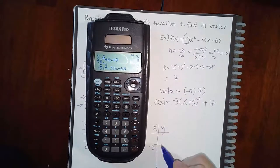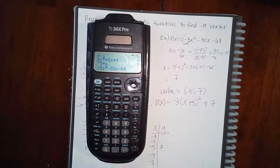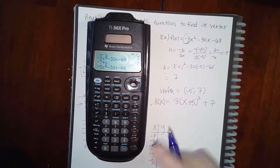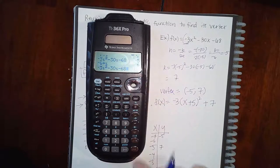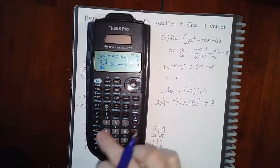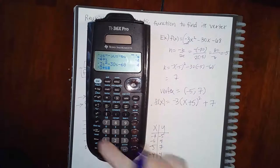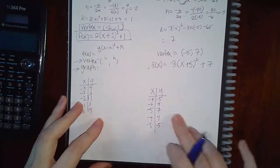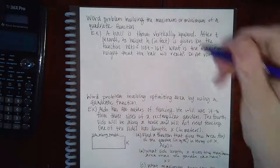To graph, put (-5, 7) in the middle of the table, pick two x-values less than -5 and two greater, plug them all in, then click the parabola button to draw the curve.